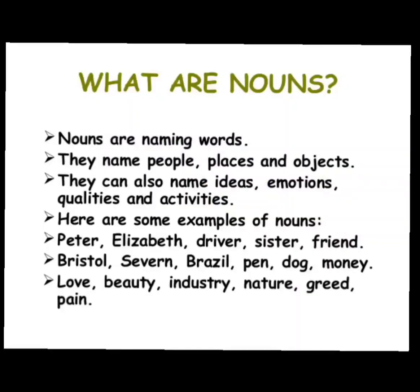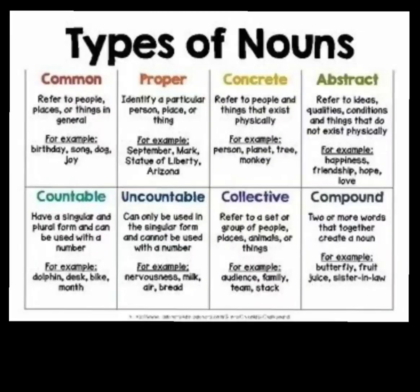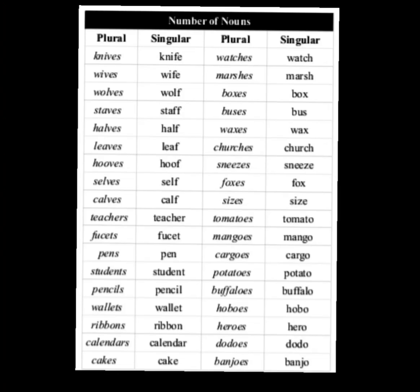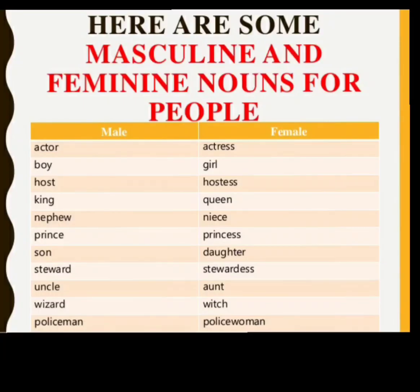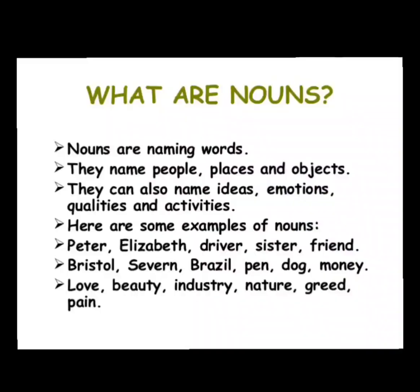In chapter 3 Nouns, we have already studied what nouns are, the different kinds of nouns, nouns as a number, and nouns as a gender. Nouns can be the name of a person, place, animal, thing, or an idea. They are divided into different categories: proper noun, common noun, collective noun, and abstract noun.